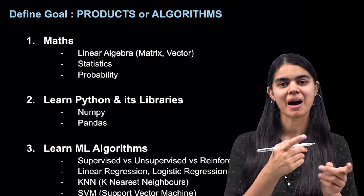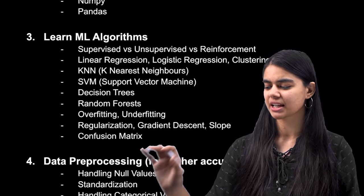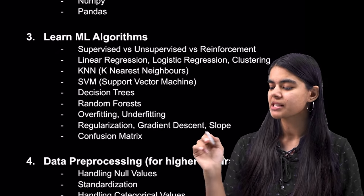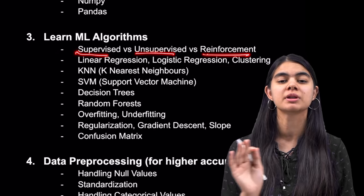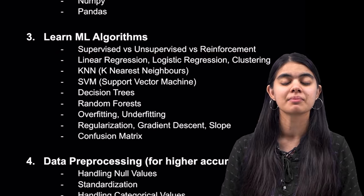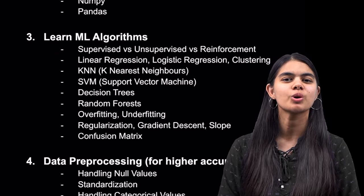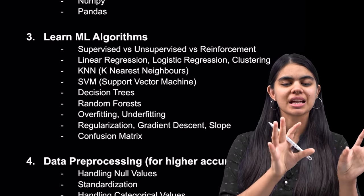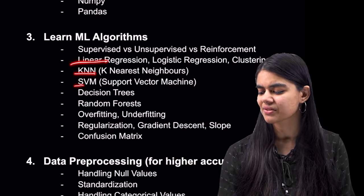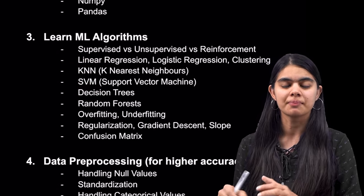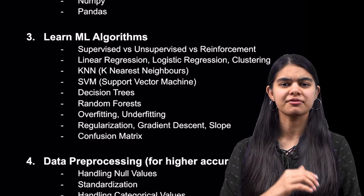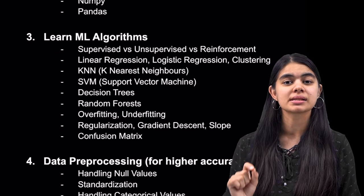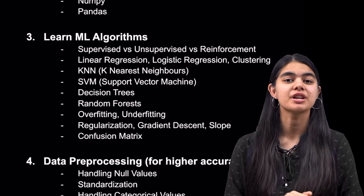Once we have learned Python, we come to the core of machine learning. There are important algorithms and topics to cover. The first things are Supervised, Unsupervised, and Reinforcement Learning — the three core branches. Then the key algorithms: Linear Regression, KNN, SVM, and Decision Trees. Why list these? So that when you refer to any resource or playlist, you can check that these topics and concepts are covered in it, and then refer to that resource.